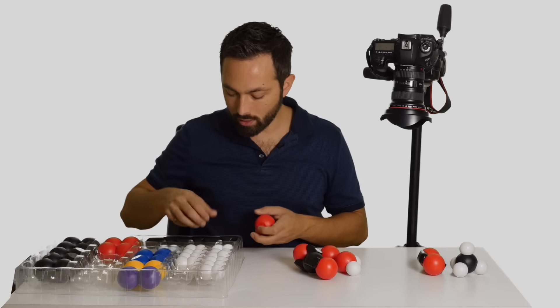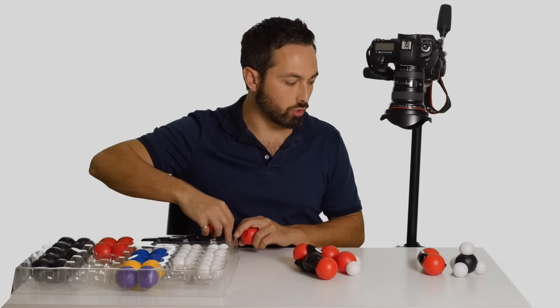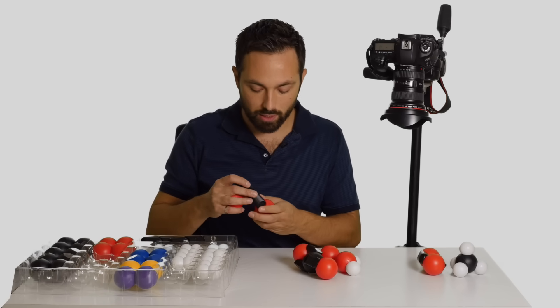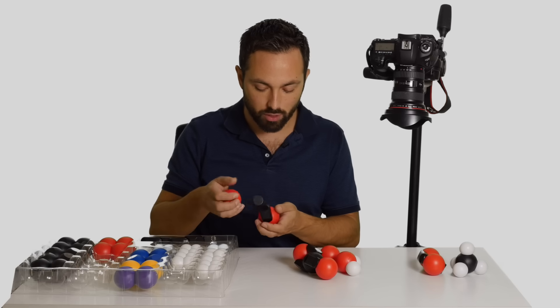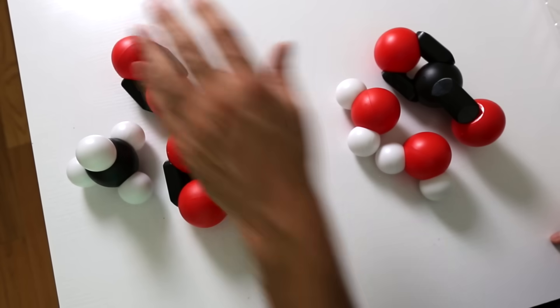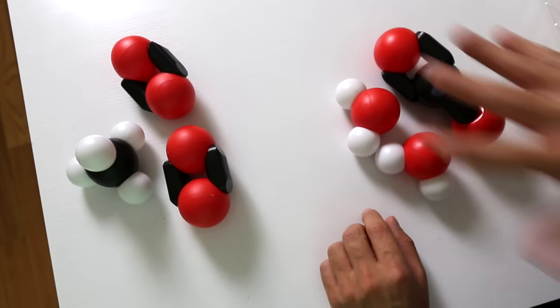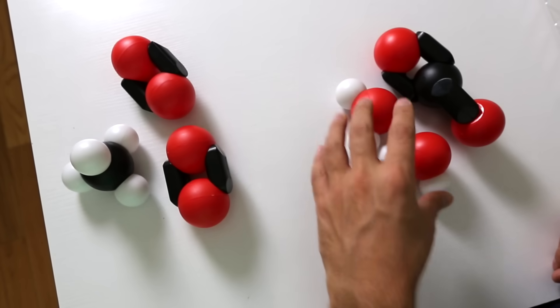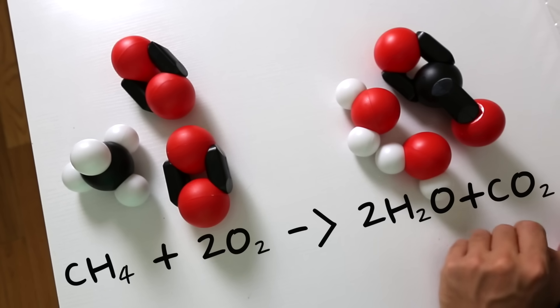So I'm going to add another oxygen molecule to our reactant side. I'm going to balance this equation out. There we go. So now four oxygens on the reactant side, four on the product side. Four hydrogens, four hydrogens, and one carbon, one carbon.